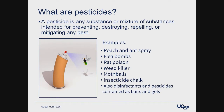When we talk about pesticides, we really have to define what it is. A pesticide is a substance or mixture of substances intended to prevent, destroy, repel, or mitigate any pest. There are many different examples of pesticides you might have used yourself: roach or ant spray, flea bombs, rat poison, weed killers, mothballs, insecticide chalk — some legal, some not. Disinfectants are actually also considered pesticides, and we talk a lot about disinfectants now in the context of COVID. Some pesticides contain baits and gels as well.